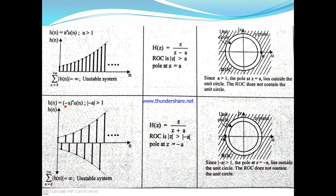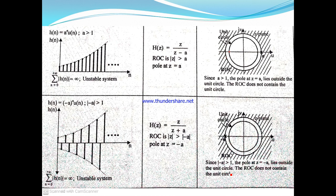Similarly, for h(n) = (−a)^n · u(n) with |−a| > 1, the Z-transform is H(z) = z / (z + a), giving pole z = −a. The ROC is |z| > |−a|. Since |−a| is greater than 1, the pole lies outside the unit circle. The ROC does not contain the unit circle and the poles lie outside the unit circle, so this system is also unstable.